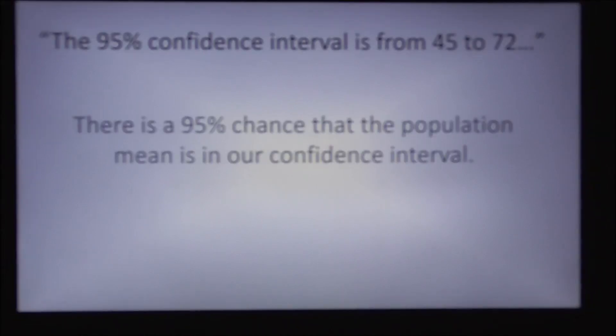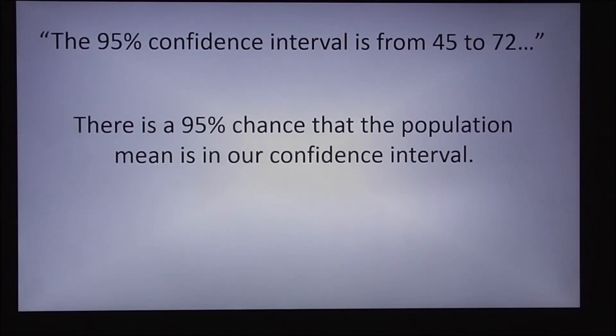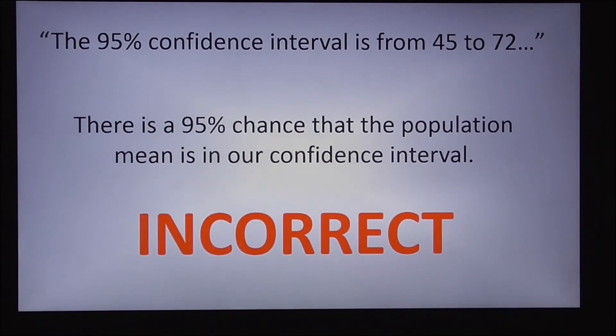Here's another example. There is a 95% chance that the population mean is in our confidence interval. Well, this is exactly the same thing as the previous slide because the population mean and the true mean are essentially the same thing. So the argument that this is the right way to interpret this is the same and they're both incorrect.